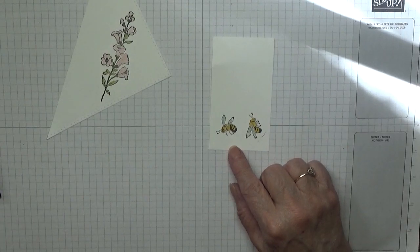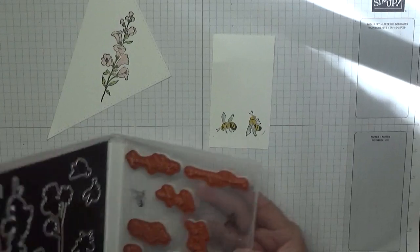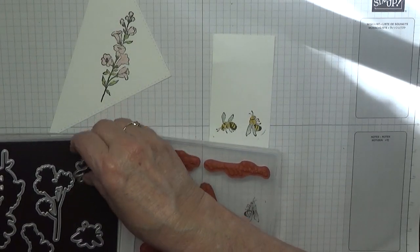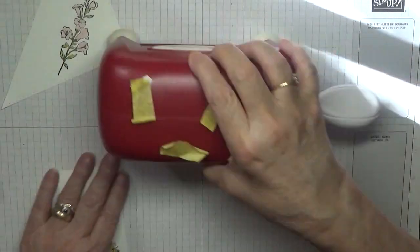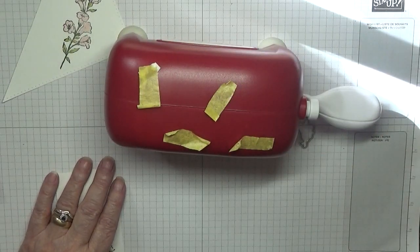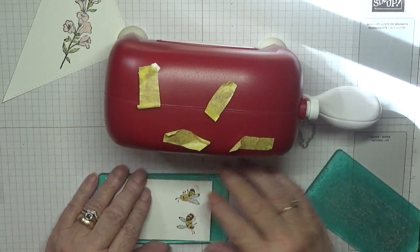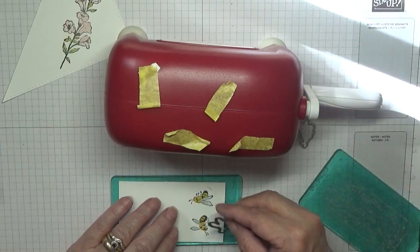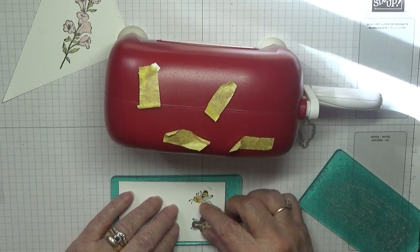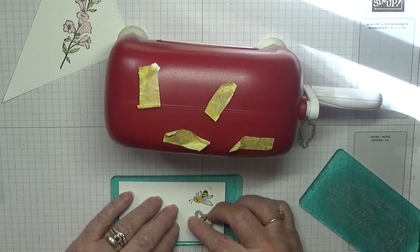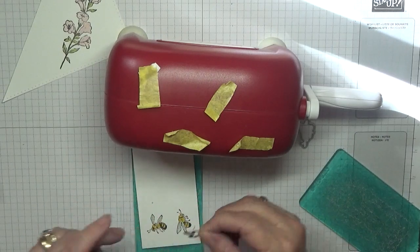Right, we need to cut these out. We'll use these two dies, my little machine. Now I can't figure out which way these go.